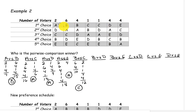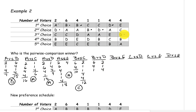Now we'll compare B and D. D is above B on the first two. B is above D on the next six, and also on this four. B is above D on the one. D is above B on the next one. D is above B on the four, and also on the last four. B has a total of 11 and D also has a total of 11, so we have a tie. When we have a tie, each candidate will get half a point.